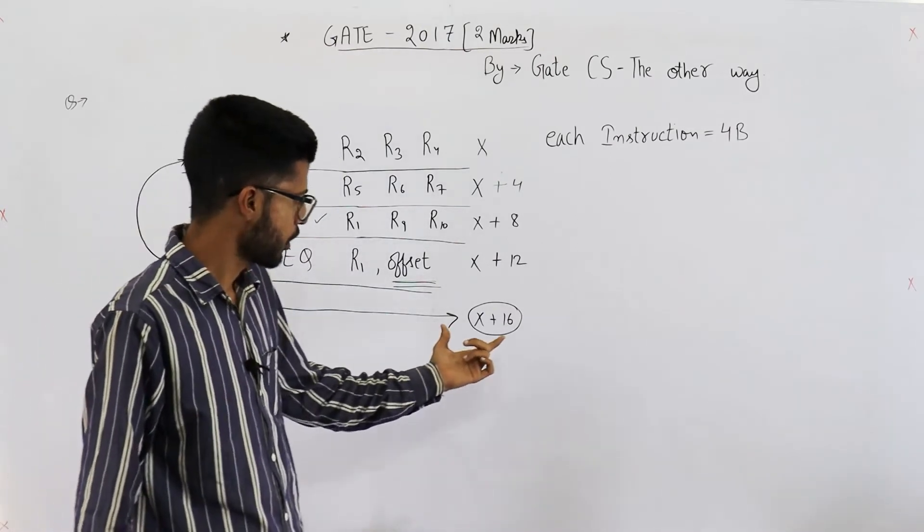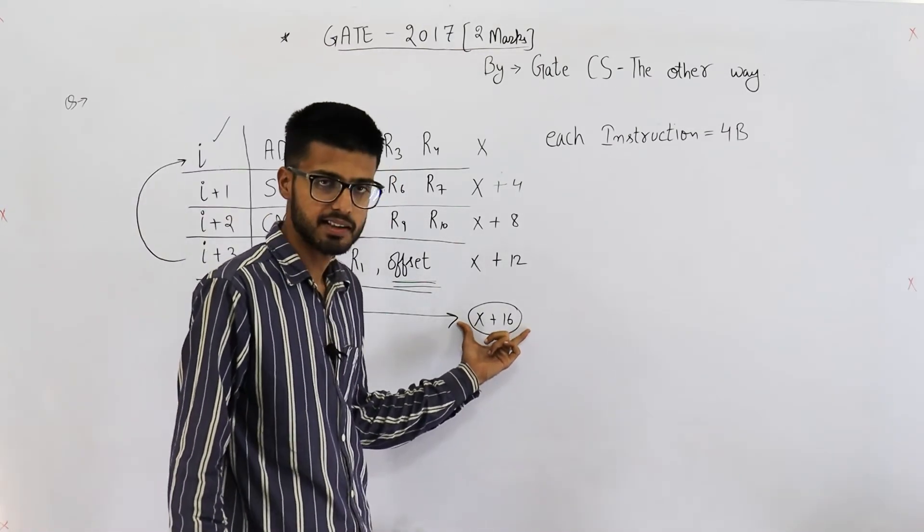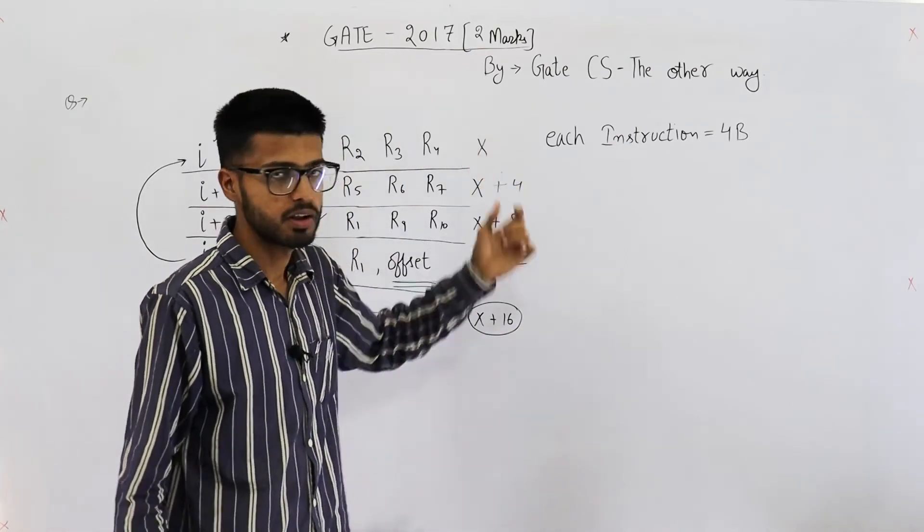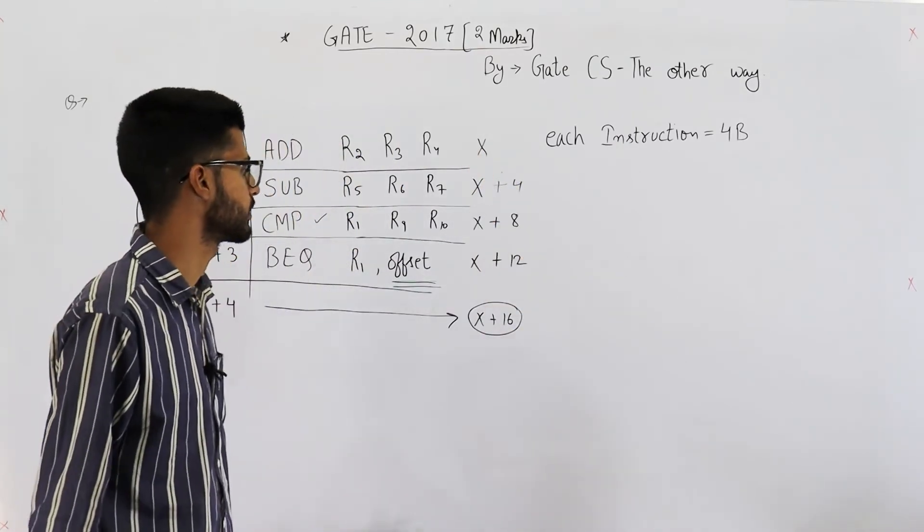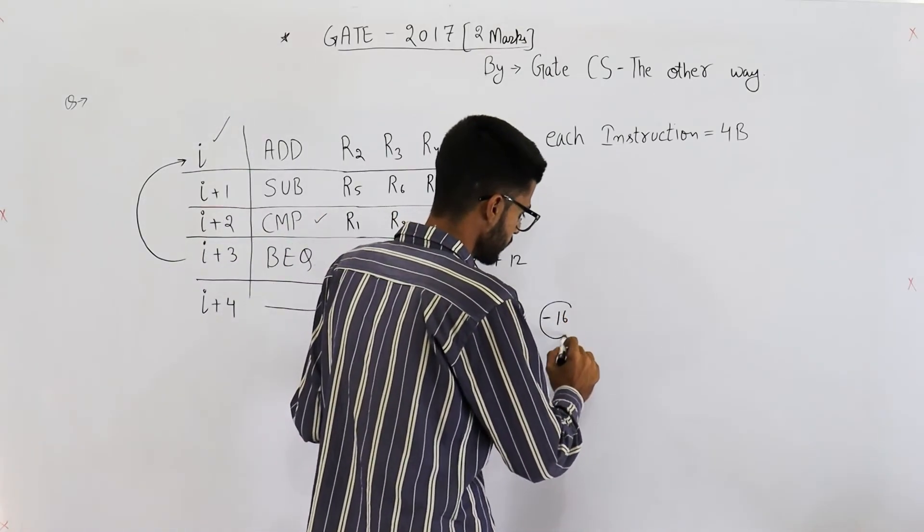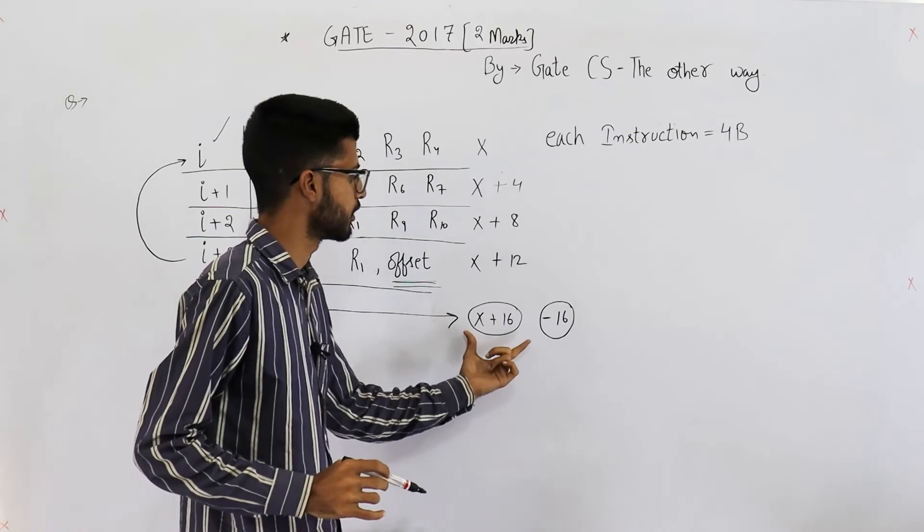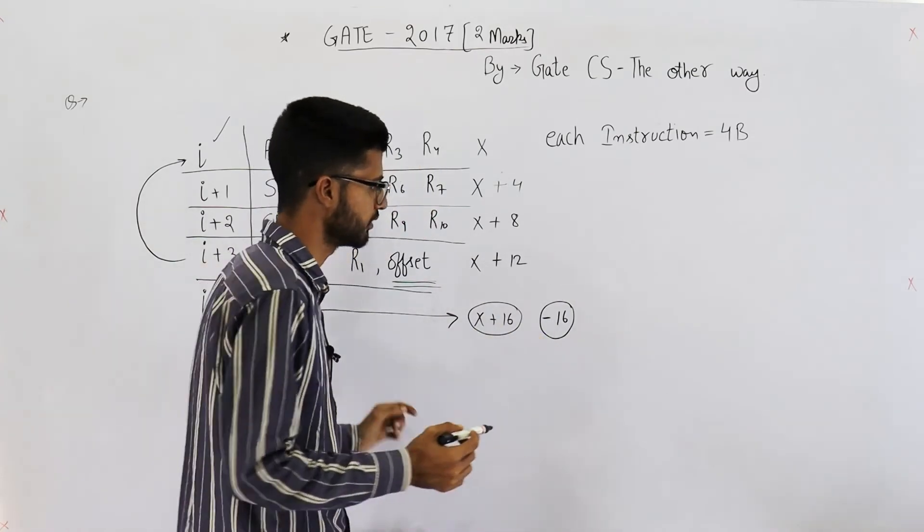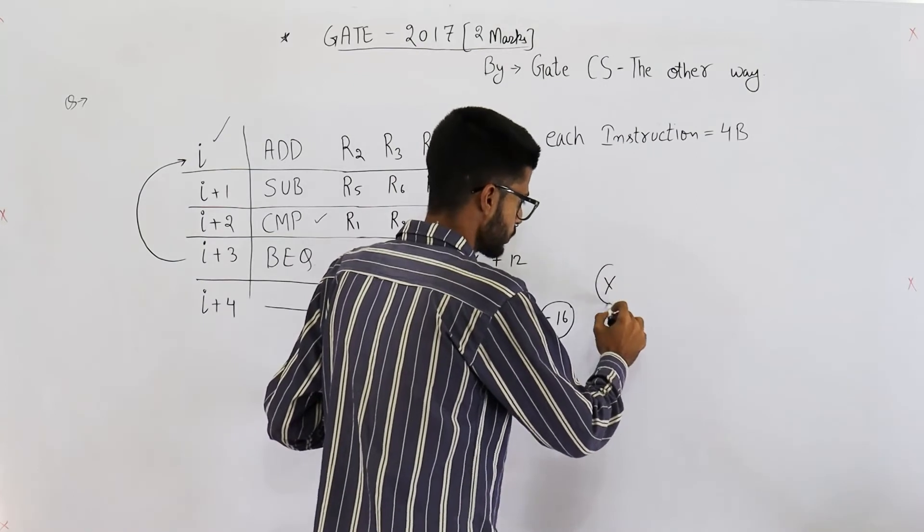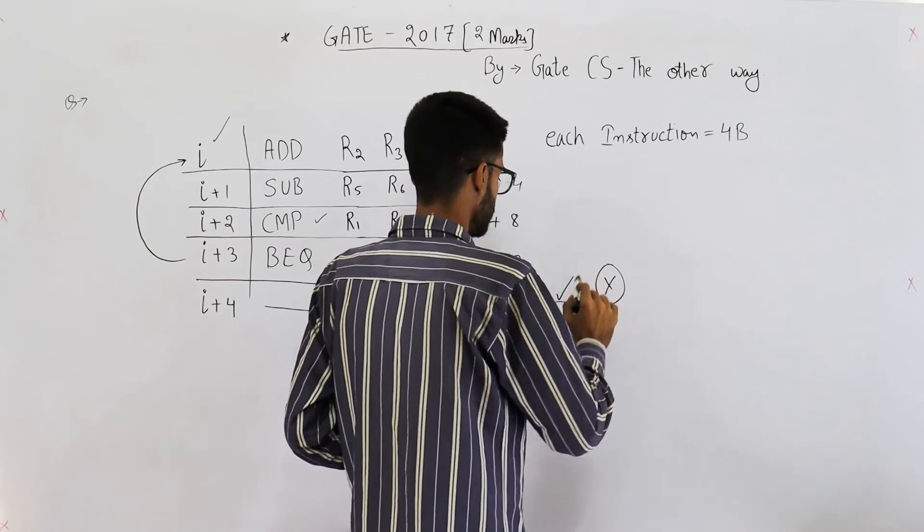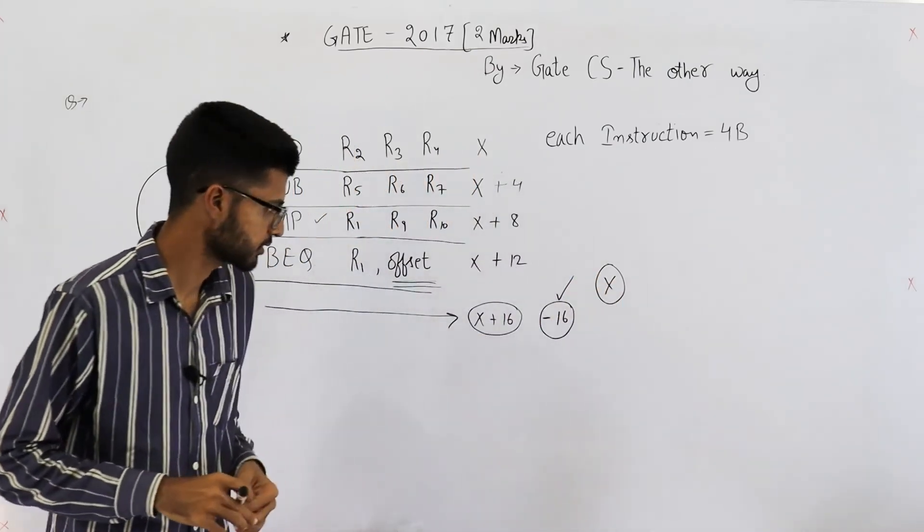Now from address x+16 we need to jump to x. What will be the relative address? That should be -16. If we add -16 to this number we will get x. That's what we want, so the value of offset must be -16. Your answer is -16.